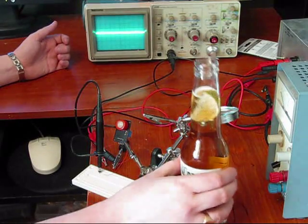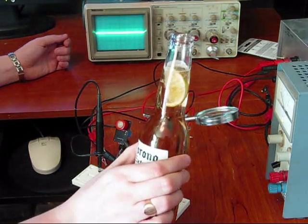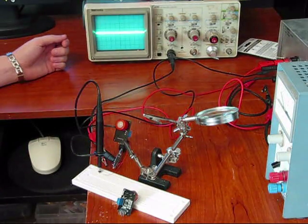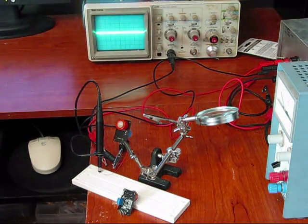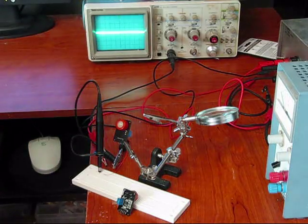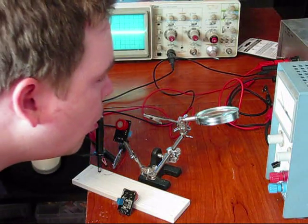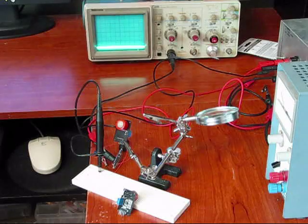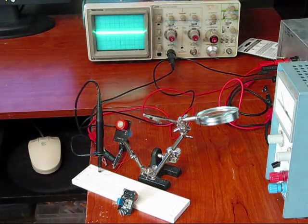So right now, what I'll do is I'll take a nice big swig of my frosty Corona, and I'll watch the output of the oscilloscope. It goes low, and then goes back to high.